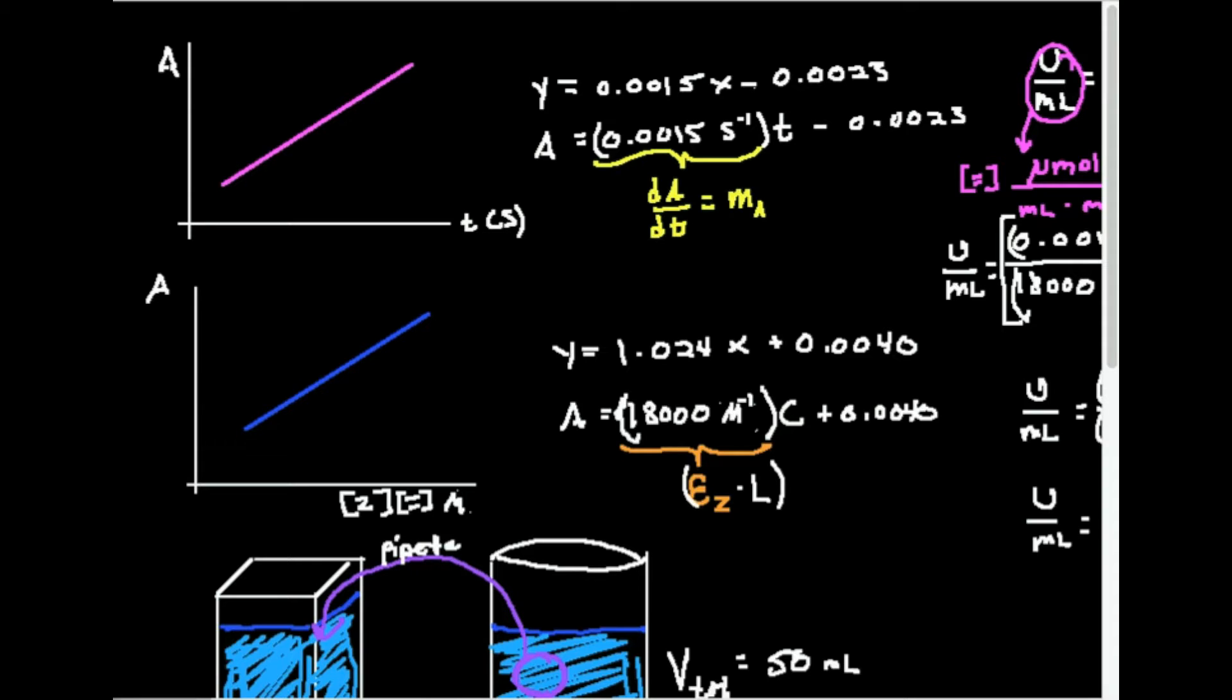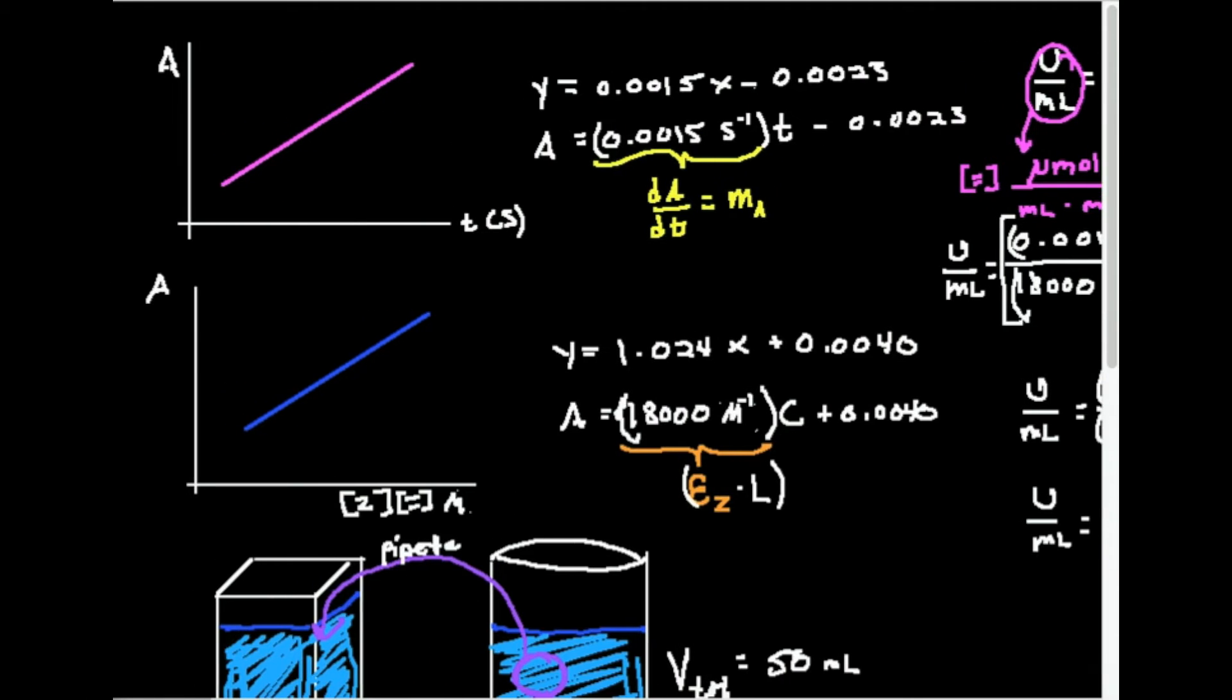Alright, so in the last videos we looked at sort of just the theory of how you go about calculating different things like specific activity, u per mL, concentration, and so forth to make your purification table. Now we're actually going to do something with some concrete numbers.